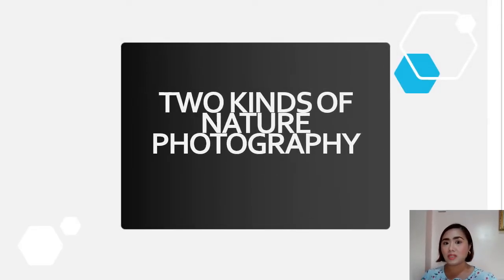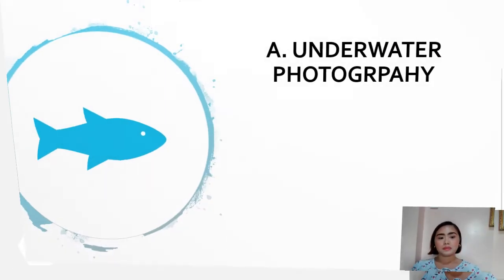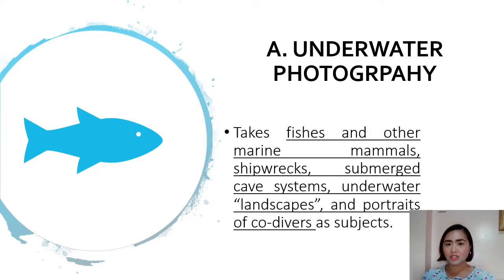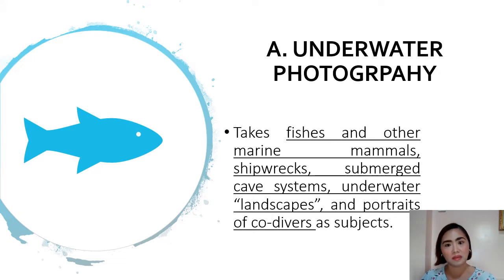There are two kinds of nature photography. The first type is underwater photography. Underwater photography takes fish and other marine mammals, shipwrecks, submerged cave systems, underwater landscapes, and portraits of co-divers as subjects.